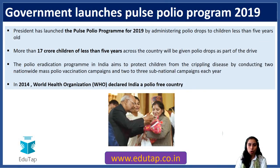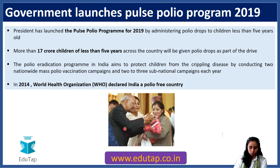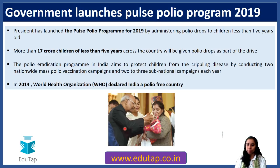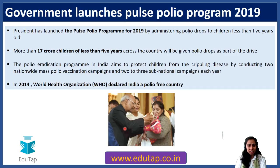The very first news is about the launch of the Pulse Polio program for the year 2019. You can see our president launching this program by administering polio drops to children. These drops are administered to children who are less than 5 years of age, and more than 70 crore children under 5 would go through this Pulse Polio program drive. This is very important because in 2014 India was declared a polio-free country, and we have to maintain that status.